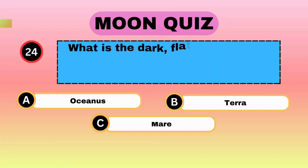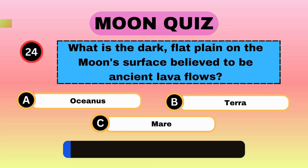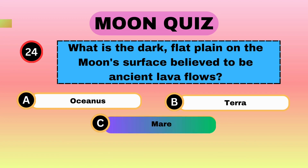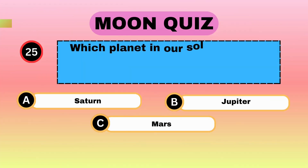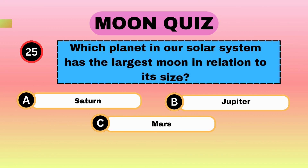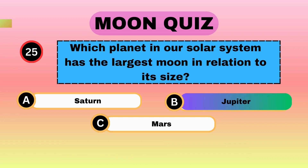What is the dark, flat plain on the Moon's surface believed to be ancient lava flows? Mare. Which planet in our solar system has the largest moon in relation to its size? Jupiter.